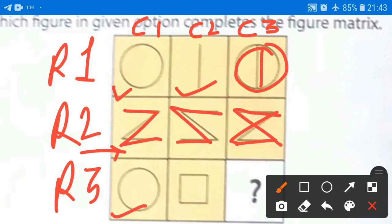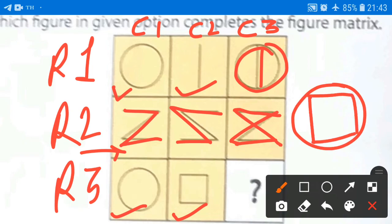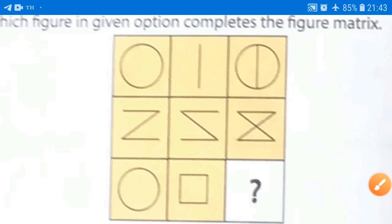Similarly, we have circle and square. So the final answer will be like this. Square will be inside the circle. So this is the logic.